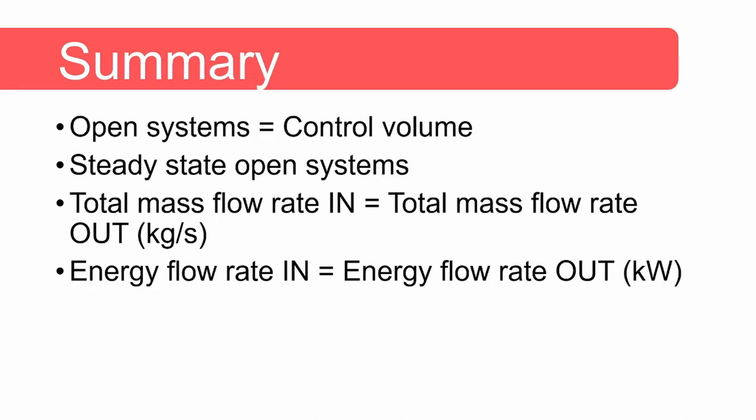To summarize: open systems are also called control volumes. For steady state operation we assume that the conditions inside the control volume do not change with time. There is therefore no accumulation of mass or energy, and the conditions of the inlet and outlet streams also do not change with time. We can do a mass balance where the total mass flow rate in equals the total mass flow rate out, and the energy flow rate into the system equals the energy flow rate out. Usually we ignore kinetic and potential energy, and it will be clear from the problem statement whether it needs to be taken into consideration. In the course notes, two examples are done to illustrate this, and examples of typical steady state open systems are also discussed.